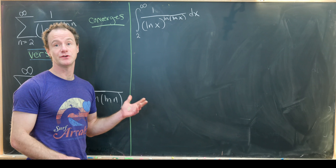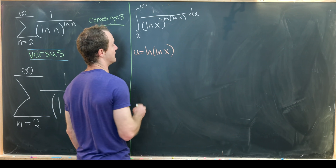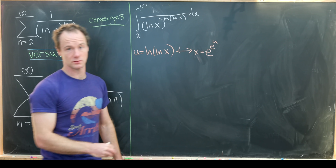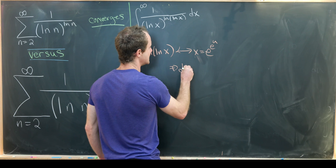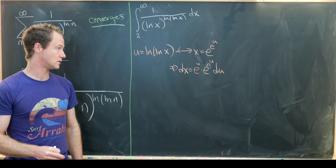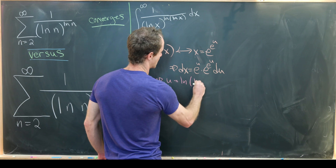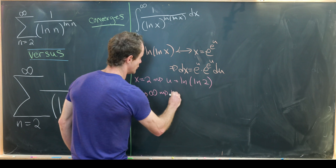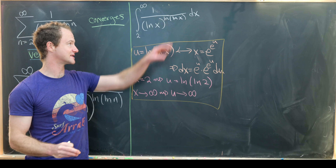We'll use a substitution similar to before. Let u equal natural log of natural log of x. Then x equals e to the e to the u, and by the chain rule dx equals e to the u times e to the e to the u du. When x equals 2, u equals natural log of natural log of 2, and as x approaches infinity, u approaches infinity as well. Those are all the parts needed to translate the integral.